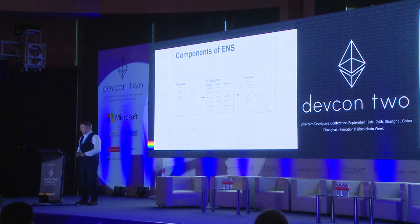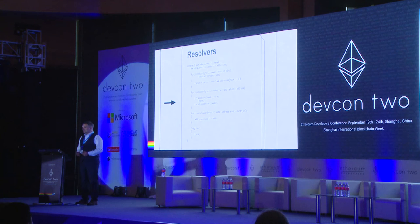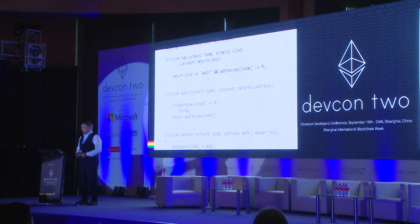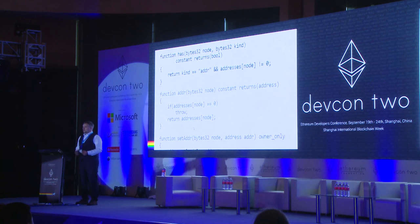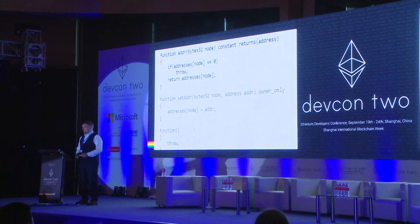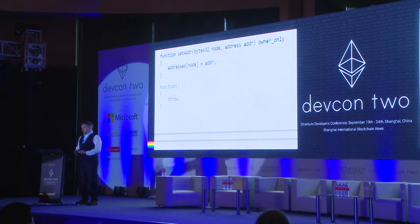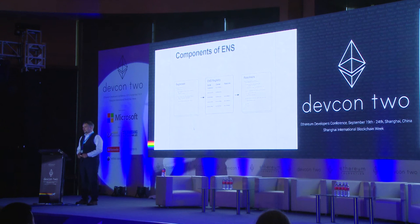The next component of ENS is the resolvers. Resolvers can be written by individual users — they can be extremely simple or very sophisticated. A simple resolver owned by a particular user only registers names for them. It has three main functions: 'has', which answers whether it knows the answer to a particular question; 'addr', which is what everyone trying to resolve names calls — you pass in the node, and if it has it, it returns it, otherwise it throws an exception; and 'setAddr', which lets the owner set the address. It's an extremely simple contract and that is the entirety of a fully functional resolver.